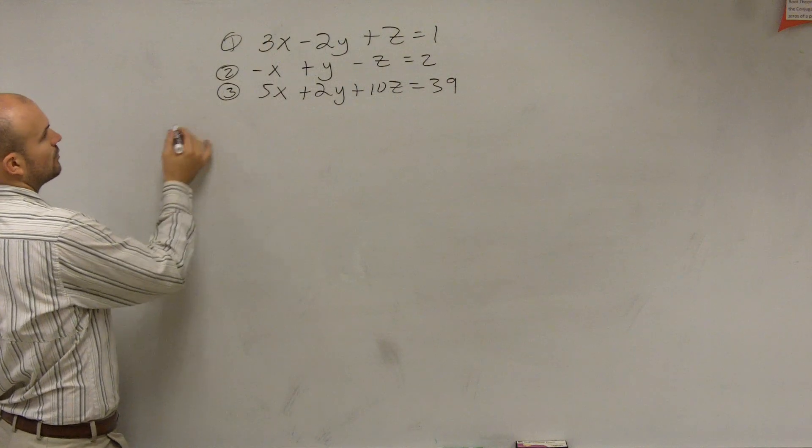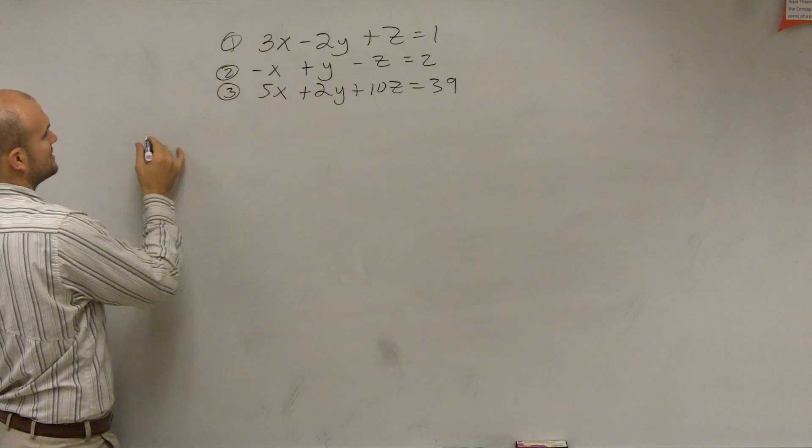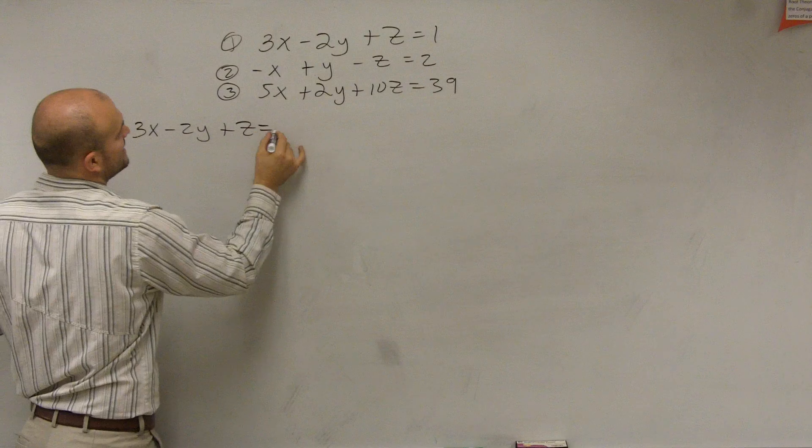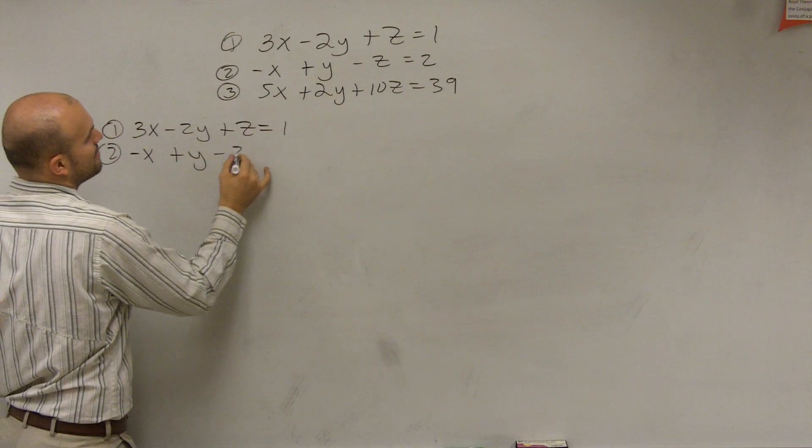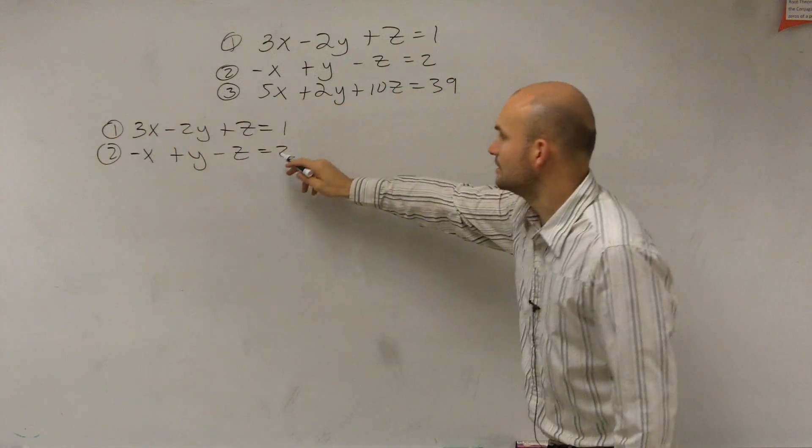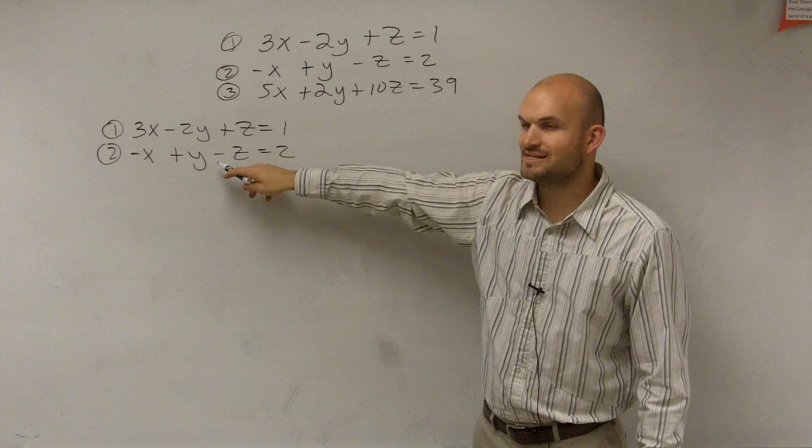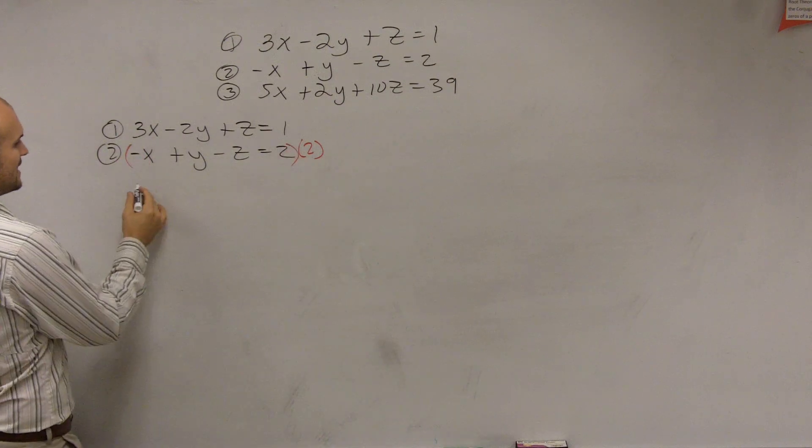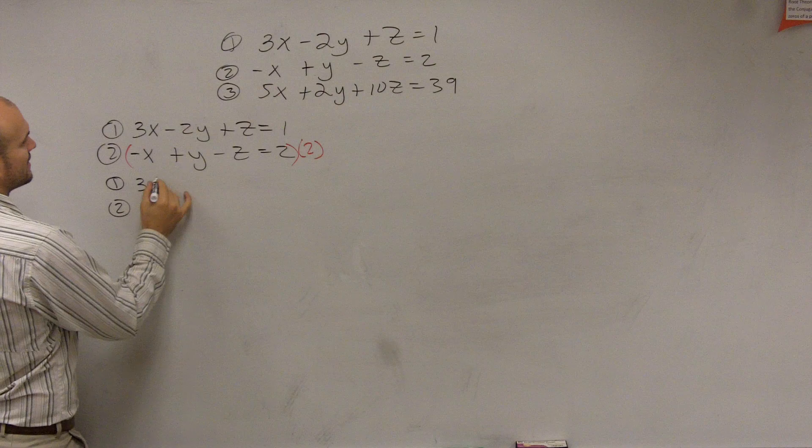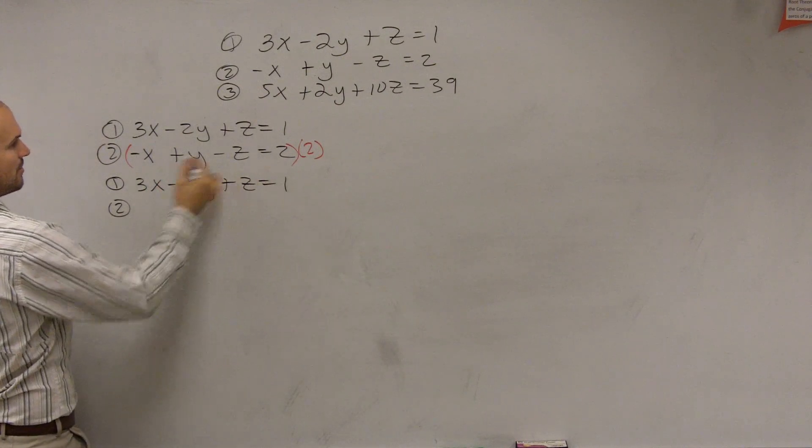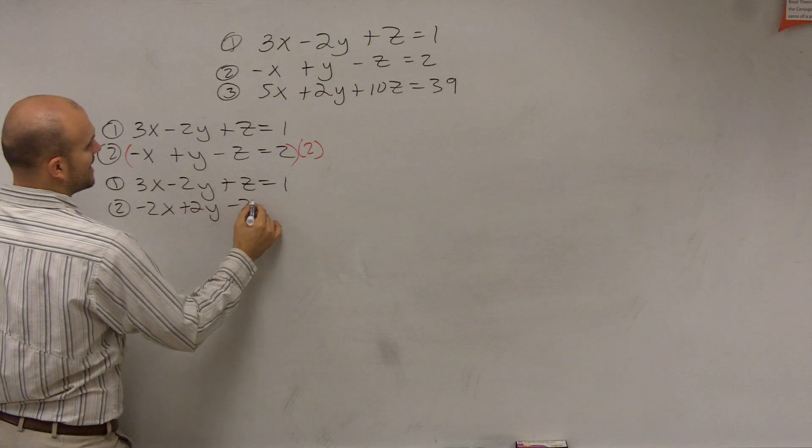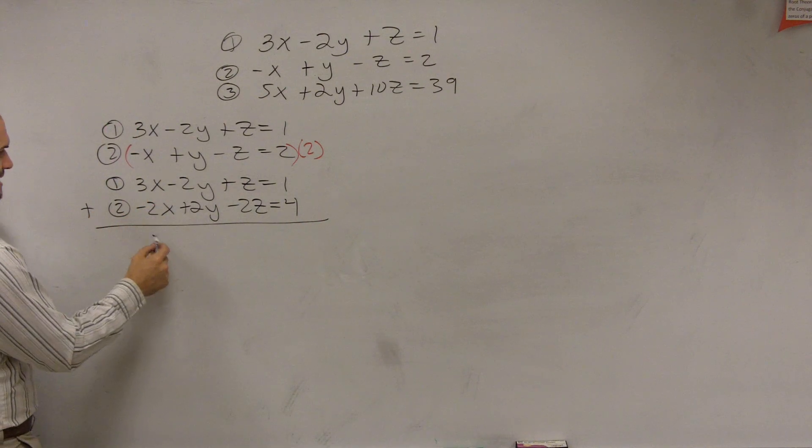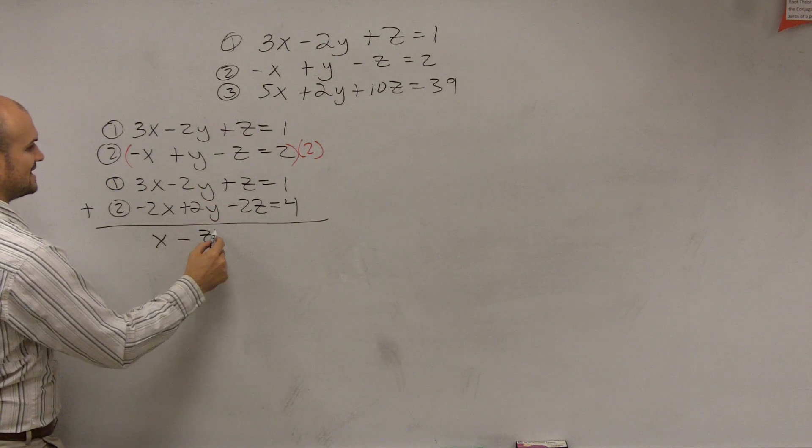So the way that I'm going to eliminate is I'm going to take equation one and equation two. So to eliminate, let's take equation one and equation two. Equation one is 3x minus 2y plus z equals 1. Equation two is negative x plus y minus z equals 2. So to eliminate the y in these two by elimination, what do I need to multiply my second equation by? Positive 2. Positive 2, right? And you need to make sure you multiply everything by positive 2. So I'm just going to rewrite them. So I get 3x minus 2y plus z equals 1. Multiply by 2. So now I get negative 2x plus 2y minus 2z equals 4. Add them up, so I get x, 0y minus z equals 5.